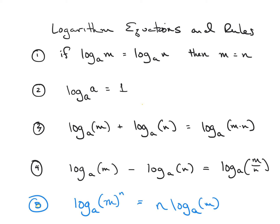First things first: if the logarithm of base A of some M is equal to the logarithm of the same base A of N — so both bases are A's, like 2 and 2, or 3 and 3 — then what you're taking the logarithm of must be equal. That's rule number one, and it's extremely important. This is the secret to solving logarithms — every problem in this video revolves around rule number one.